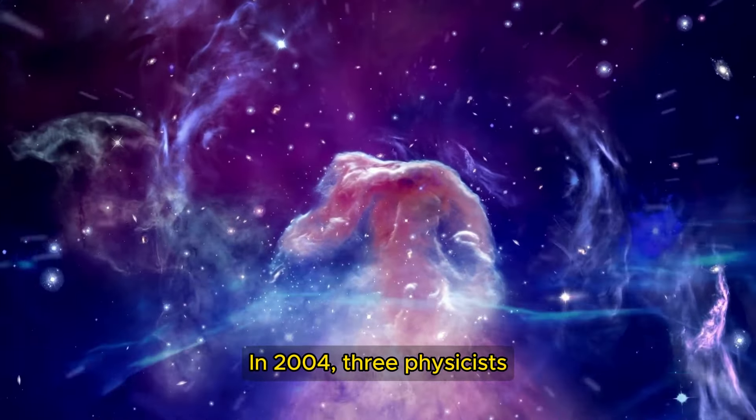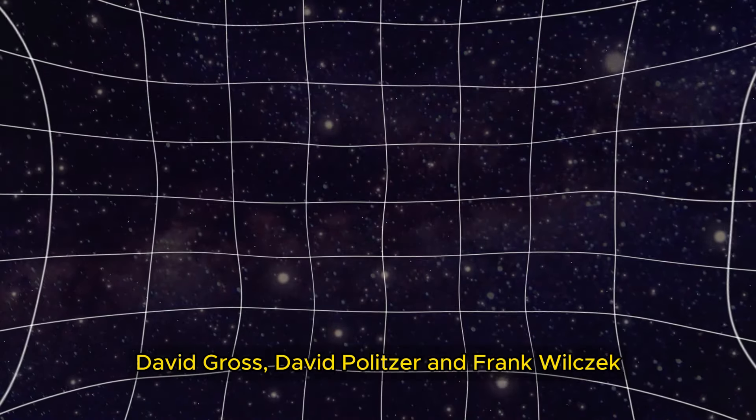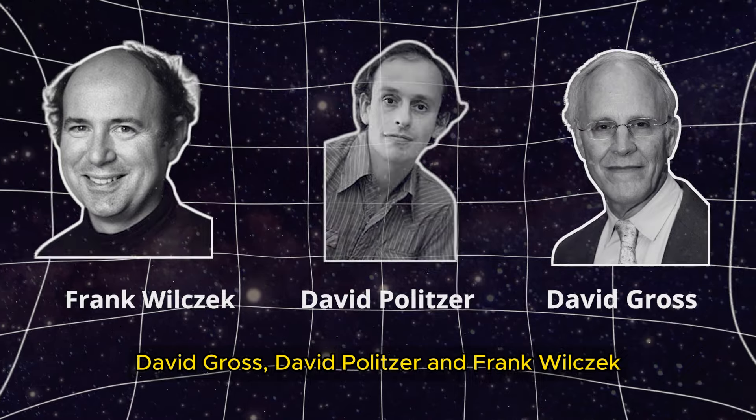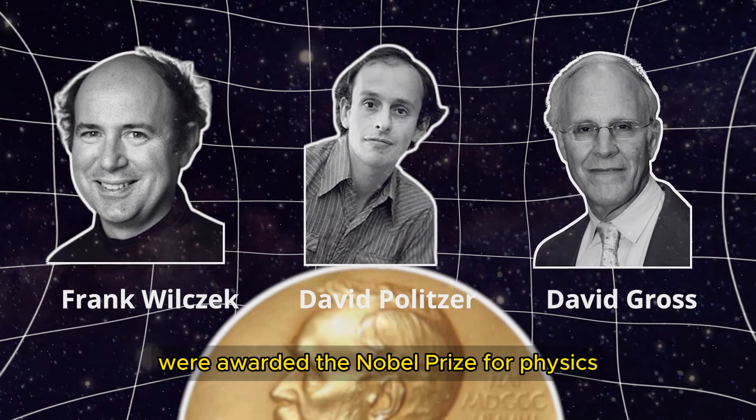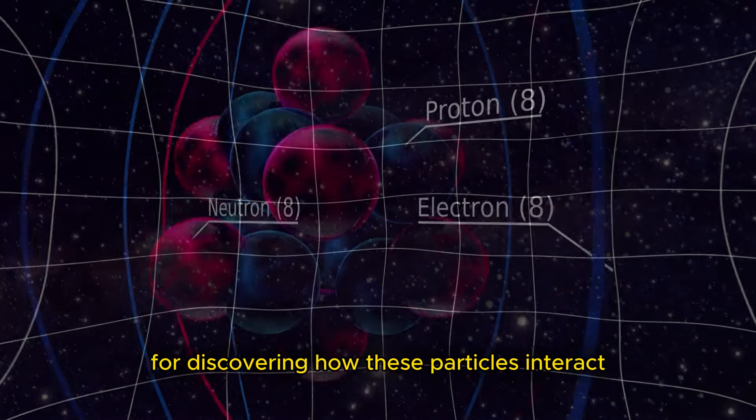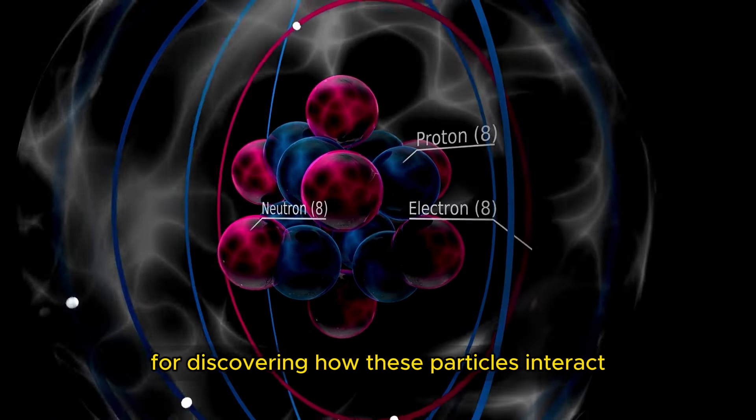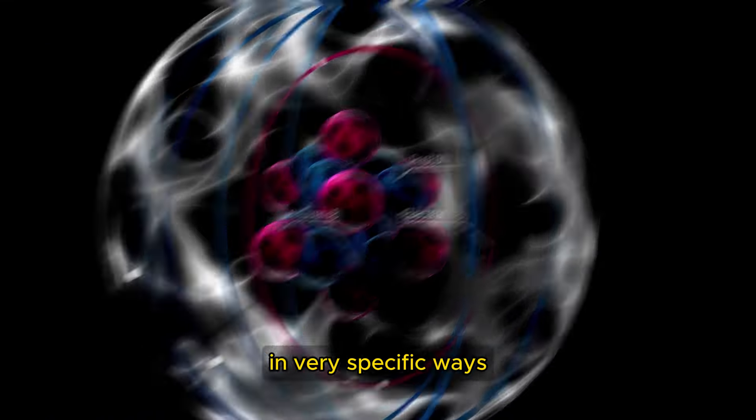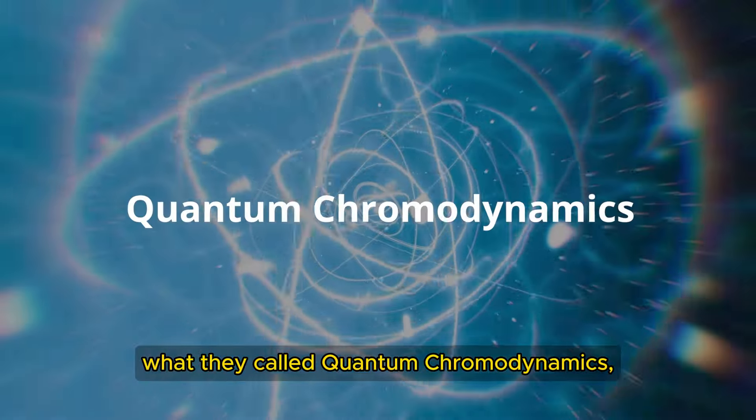In 2004, three physicists, David Gross, David Politzer, and Frank Wilczek, were awarded the Nobel Prize for Physics for discovering how these particles interact in very specific ways, what they called quantum chromodynamics.